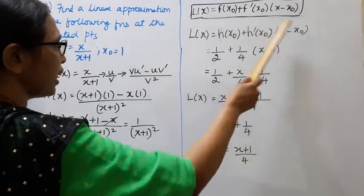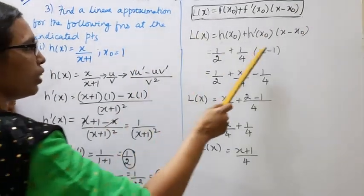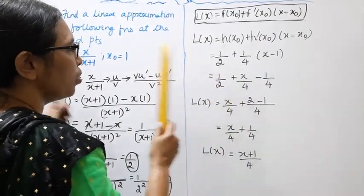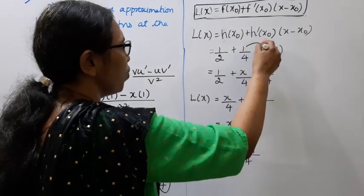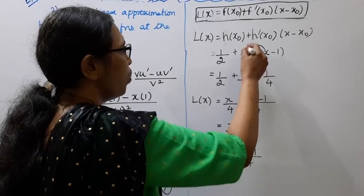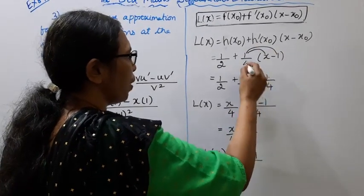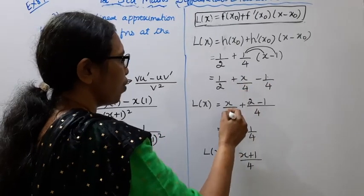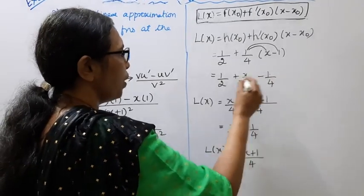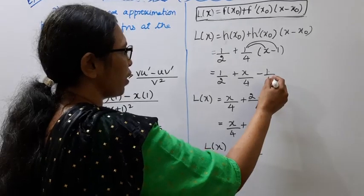h'(1) = 1/(1+1)² = 1/4. The linear approximation formula is L(x) = h(x₀) + h'(x₀)·(x − x₀), where x₀ = 1. So L(x) = 1/2 + (1/4)·(x − 1).